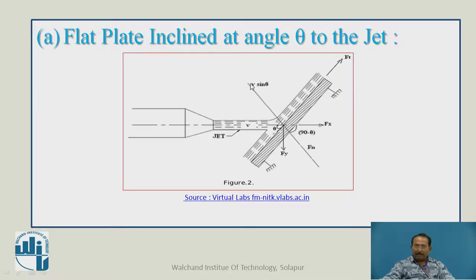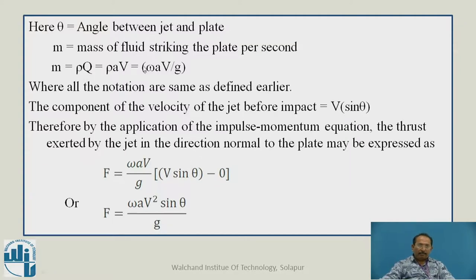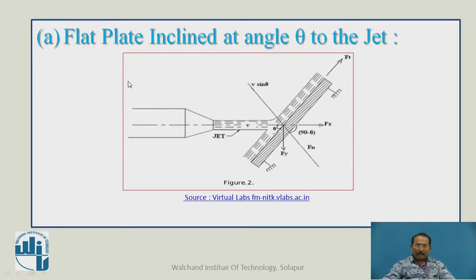This is V sin theta. This is the inclined plate. Theta is the angle between jet and plate. M is the mass of the fluid, ωAV upon g, where all notations are same as defined previously. The component of the velocity of the jet is V sin theta.